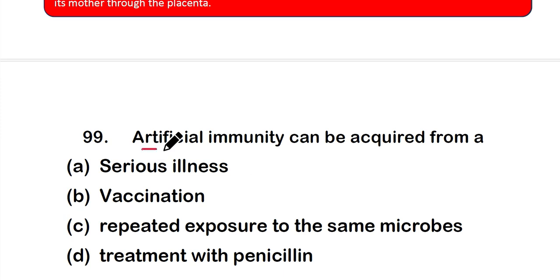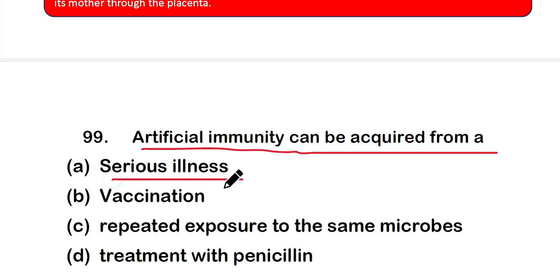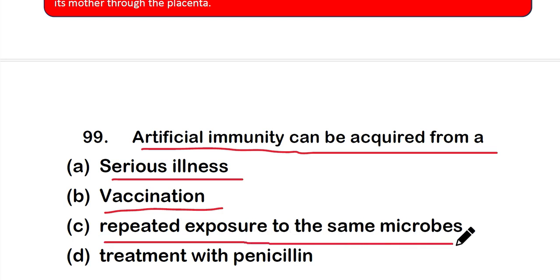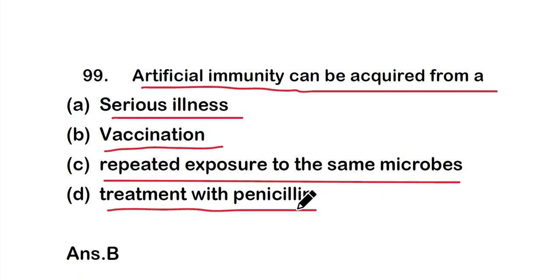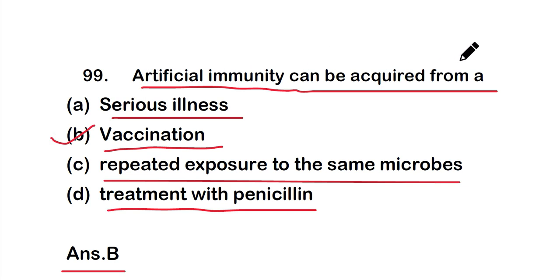Question number 99: Artificial immunity can be acquired from — option A: serious illness, option B: vaccination, option C: repeated exposure to the same microbes, or option D: treatment with penicillin. The right answer is option B — artificial immunity can be acquired from vaccination.